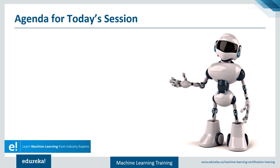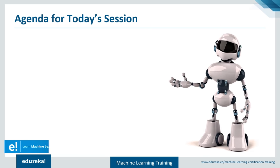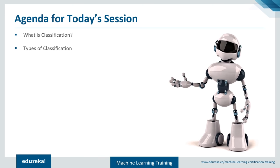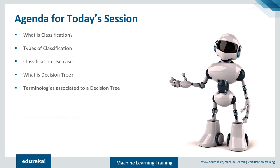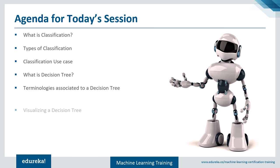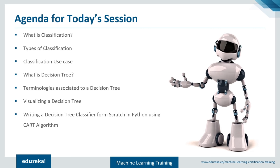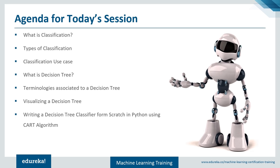A decision tree is a type of classification algorithm that comes under the supervised learning technique. Before learning about decision trees, I'll give you a short introduction to classification — what it is, its various types, and use cases. Once your fundamentals are clear, we'll jump to the decision tree part, where I'll teach you to mathematically create a decision tree from scratch, then implement a decision tree classifier in Python using the CART algorithm.